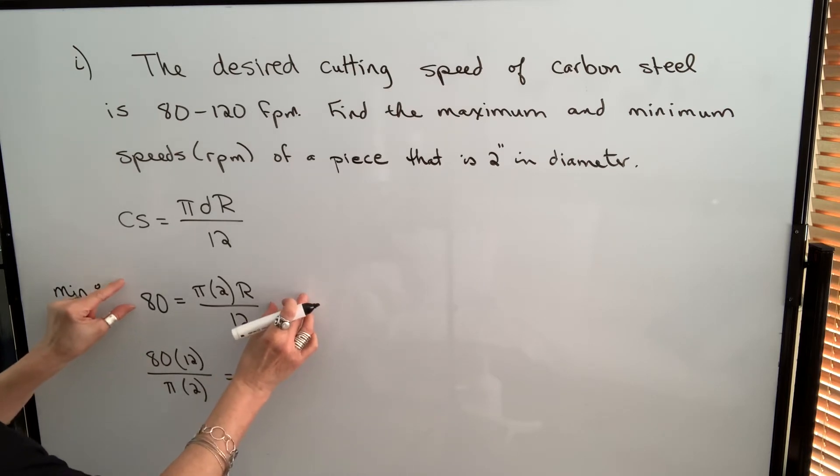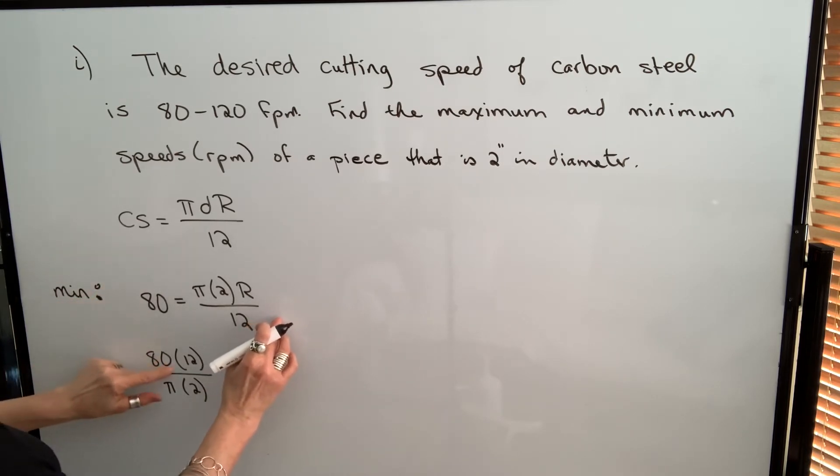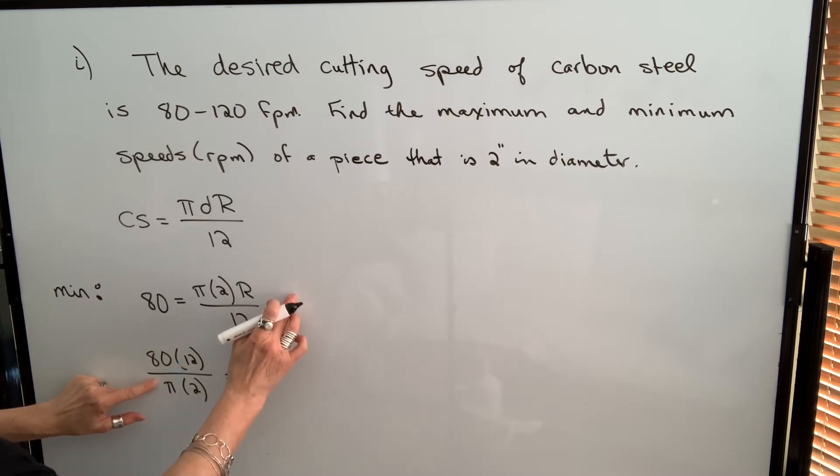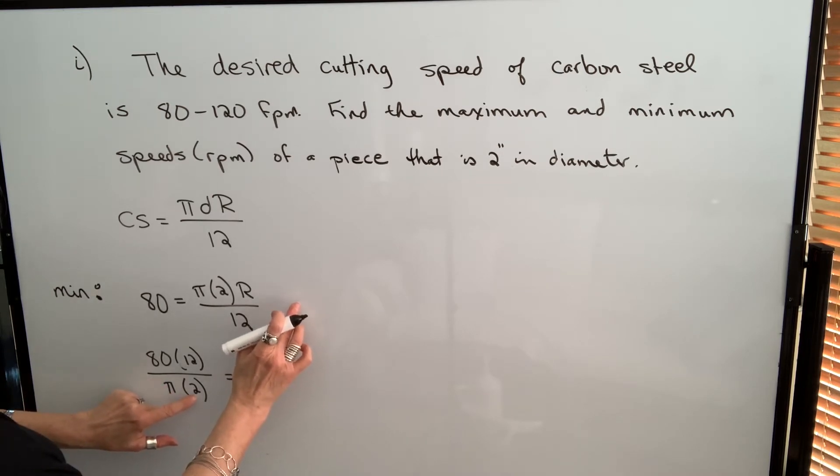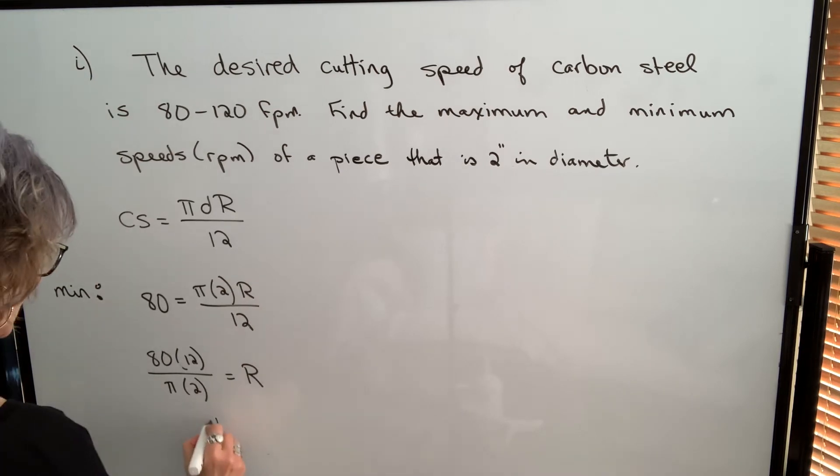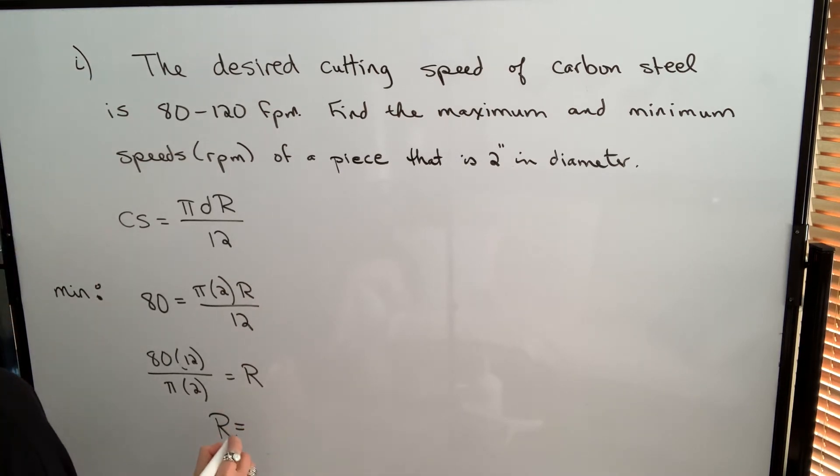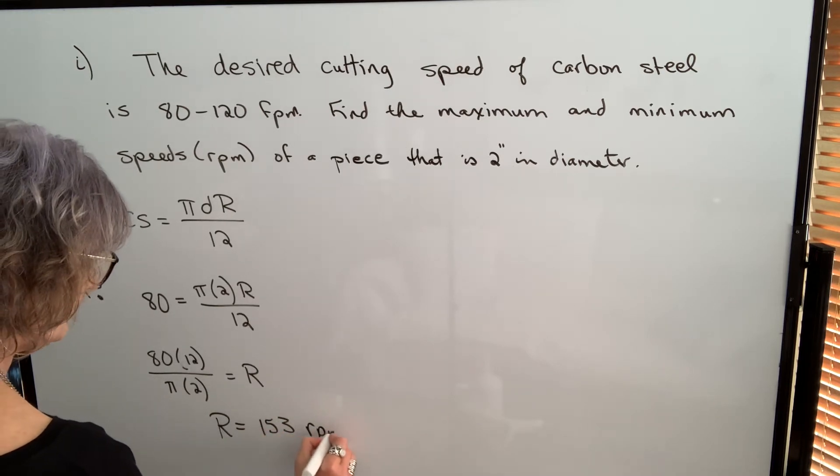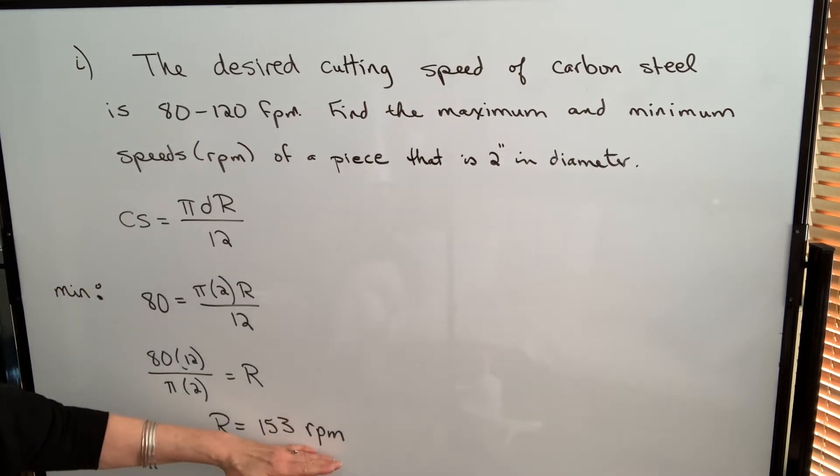I actually multiplied both sides by 12, but the 12 on the right side cancelled. I divided both sides by π, but the π on the right side cancelled, and I divided both sides by 2, and it cancelled here. So I got r by itself by doing the inverse operation. When I calculate this, I get an RPM of 153. And because we're not going to be exact with our RPM, I'm going to round off to the nearest whole number.